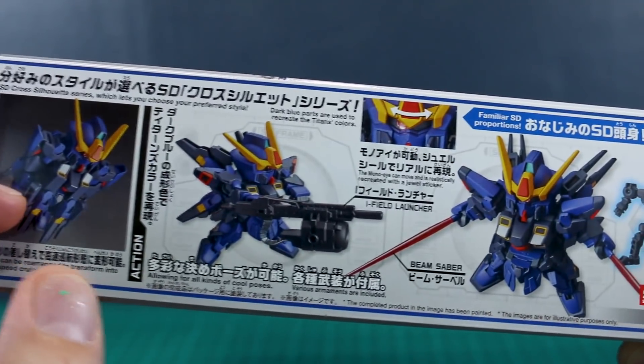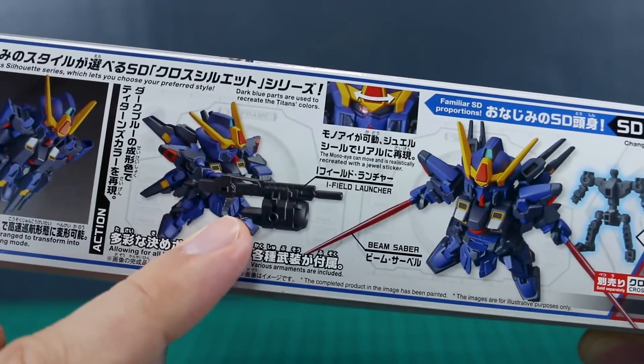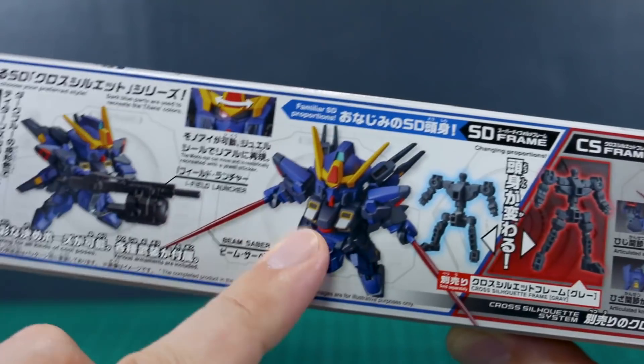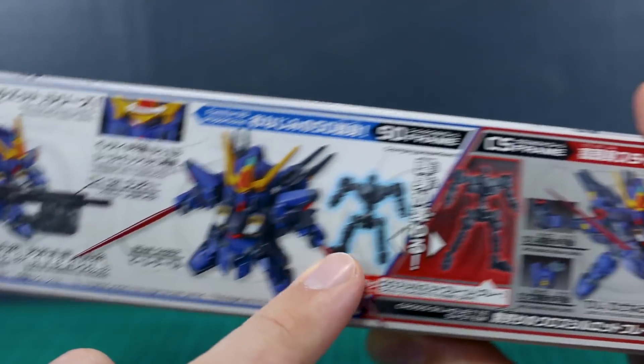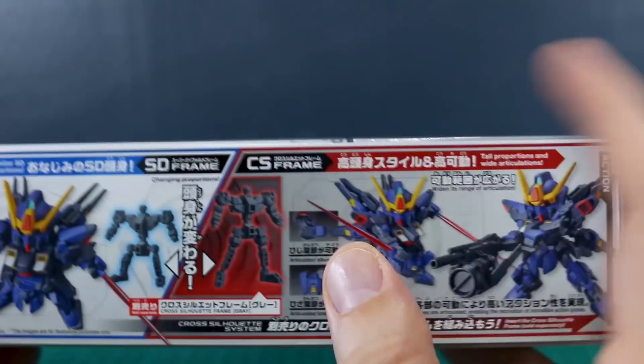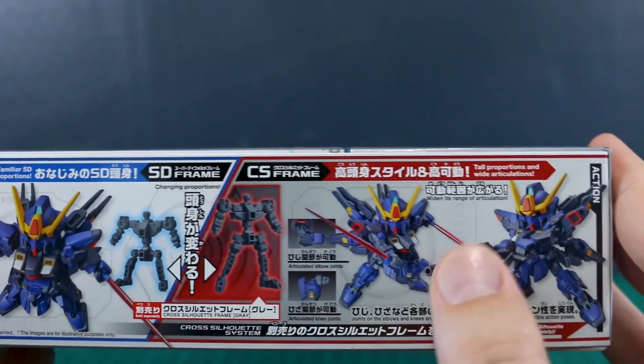It has sort of a quasi-transformation there. And of course, you can do some cool posing there with that big giant gun. It has the mono-eye, which can move side to side. It has some beam sabers there as well. There's the regular frame and the cross silhouette frame, or the larger, more articulated frame.